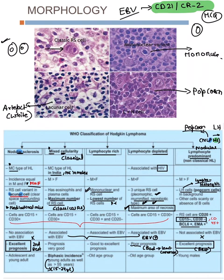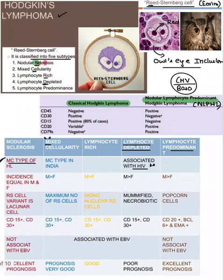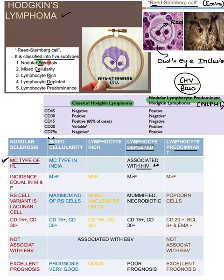Regarding prognosis: the best prognosis is NLPHL — nodular lymphocyte predominant Hodgkin's lymphoma. The second best prognosis is nodular sclerosis. The worst prognosis is lymphocyte depleted — everything is gone. Mixed cellularity is important: it shows a mixed or biphasic incidence, occurring in both adults and older people.